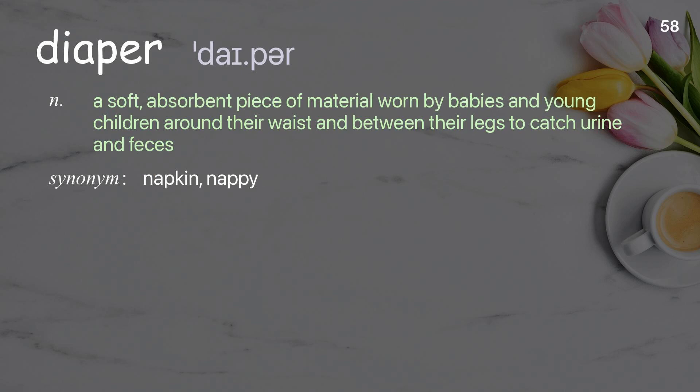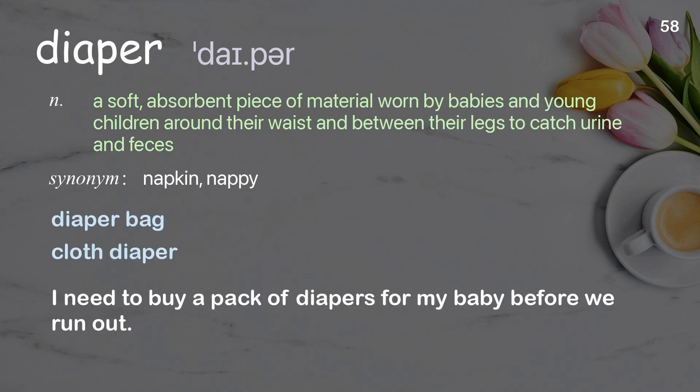Diaper: A soft, absorbent piece of material worn by babies and young children around their waist and between their legs to catch urine and feces. Examples: Diaper bag, Cloth diaper. I need to buy a pack of diapers for my baby before we run out.